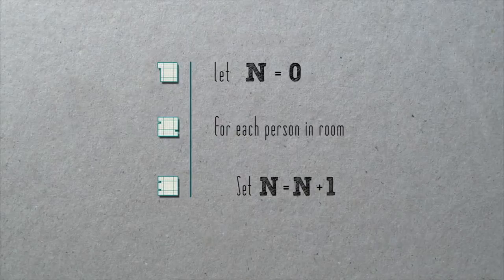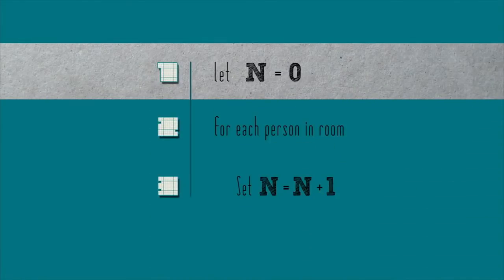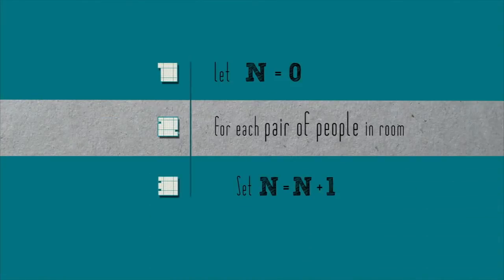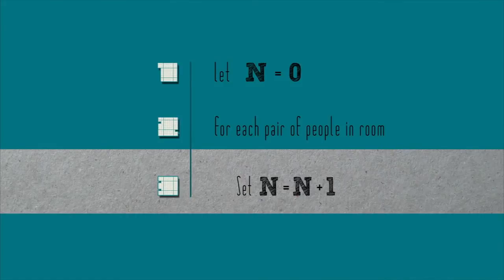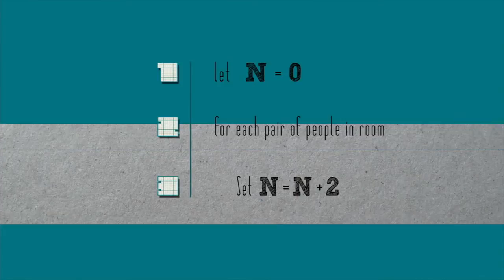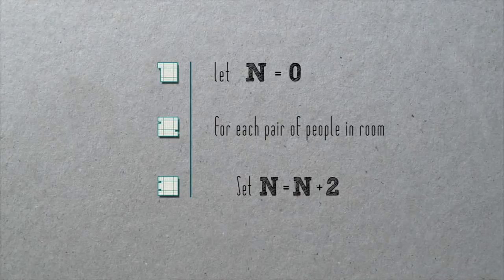Let's express this optimization in pseudocode. Let n equal zero. For each pair of people in room, set n equal to n plus two. Pretty simple change, right? Rather than count people one at a time, we instead count them two at a time. This algorithm does twice as fast as the last. But is it correct?